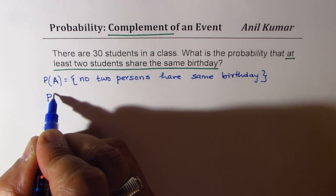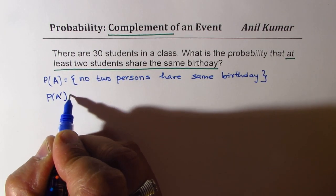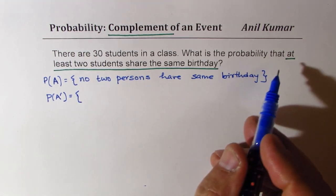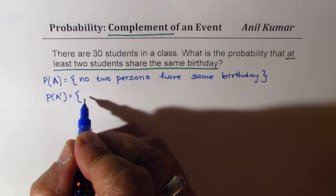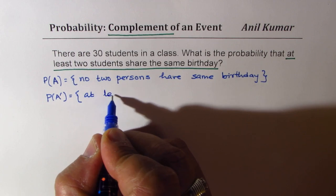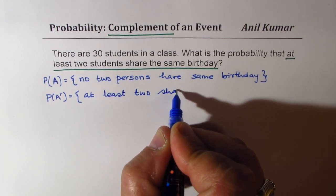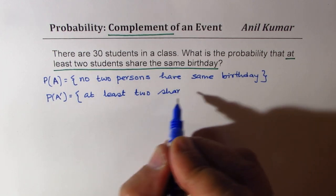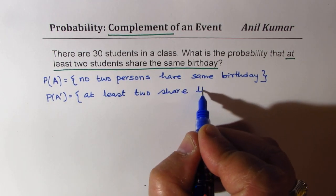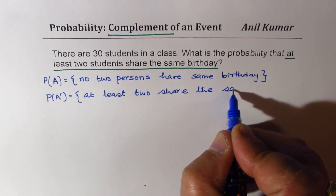In that case, probability of the complement will be at least two. It could be more also, right? At least two share the same birthday.